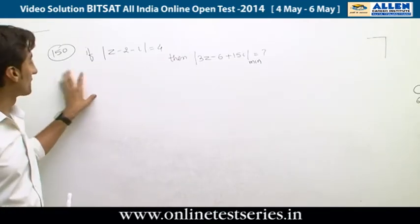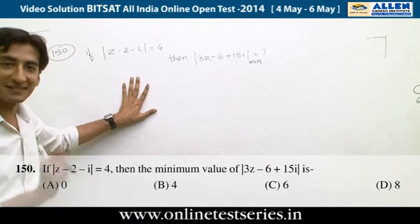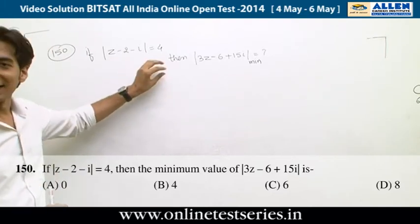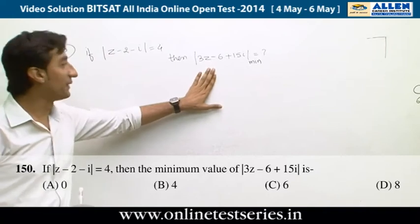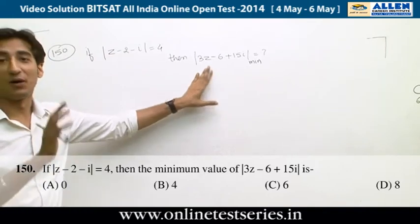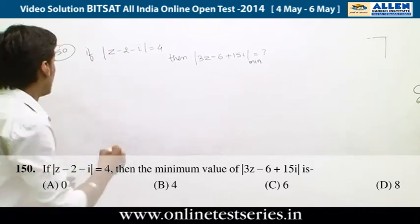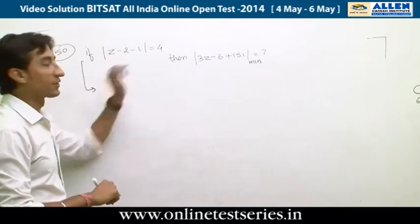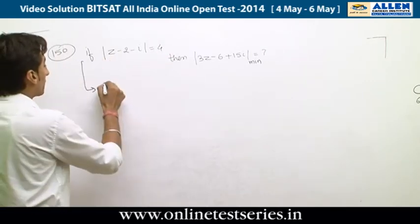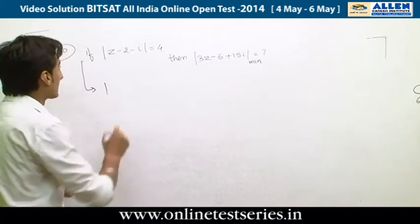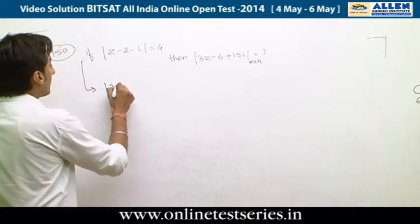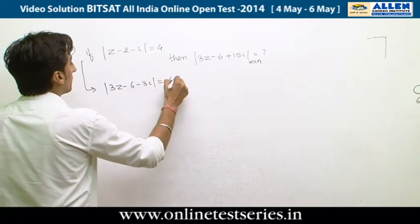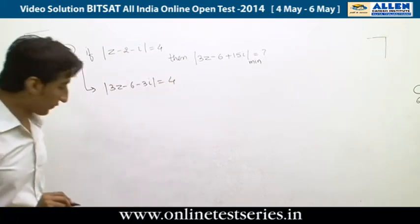Question 150 is from complex numbers. It is given that |Z - 2 - iη| = 4. To make the coefficient of Z equal to 3, we multiply through by 3, giving |3Z - 6 - 3iη| = 12.